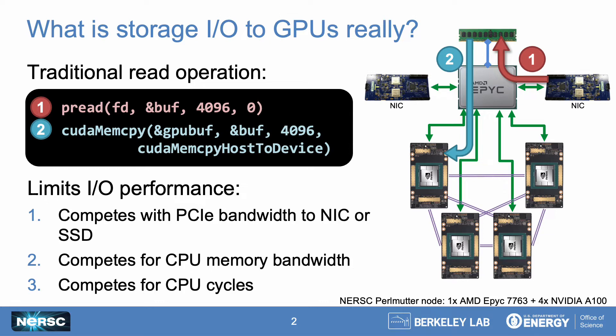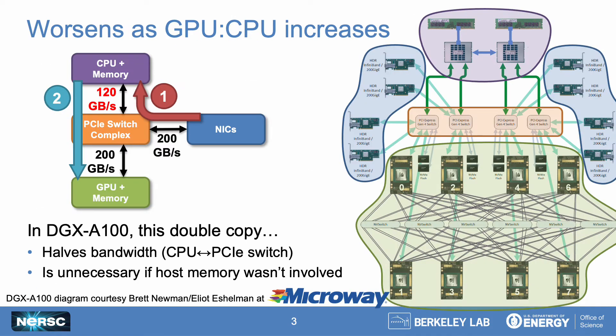If you map this read operation to a typical GPU node like the one shown here, we see that there are a few places where this process can be slowed down. First, if your PCIe is oversubscribed and you have NICs or GPUs hanging off of PCIe switches, your NICs and GPUs might be fighting with each other for bandwidth to and from that CPU memory. Second, if you have another MPI process running on the same node that's doing memory-bound computation, your I/O and that other process will be fighting with each other for CPU memory bandwidth and CPU cycles. In GPU-rich node architectures that may have a lot of PCIe switches in them, this problem can get a lot worse.